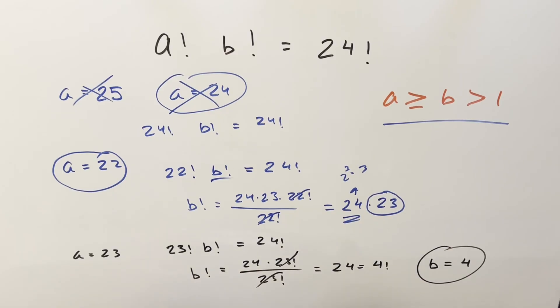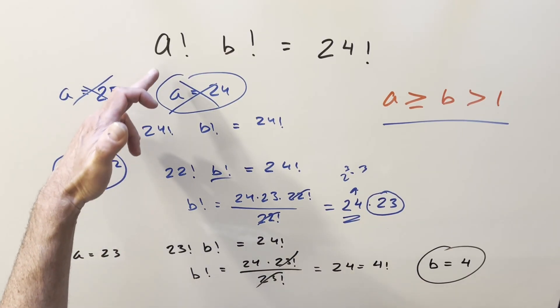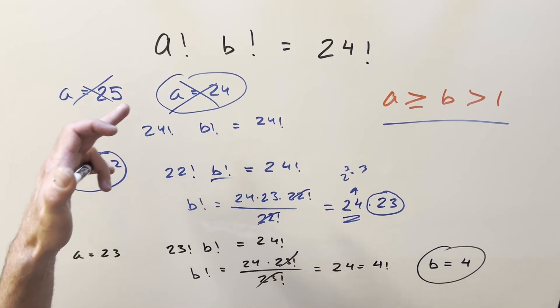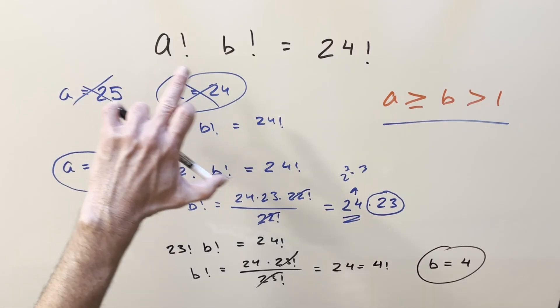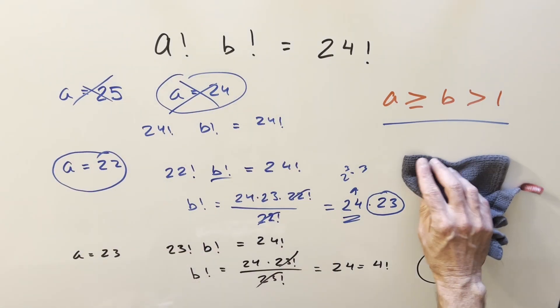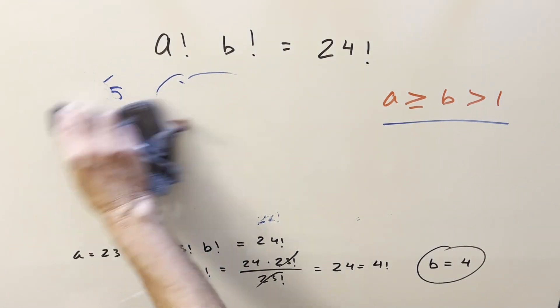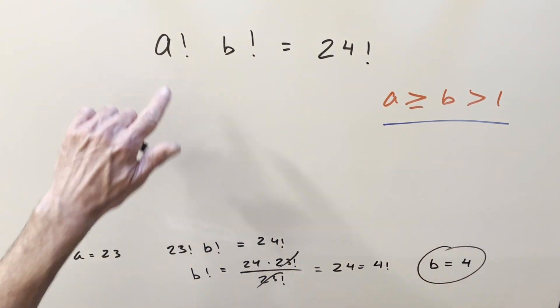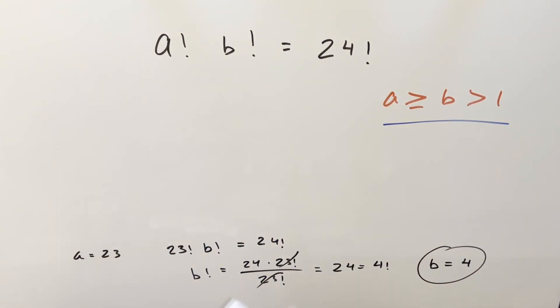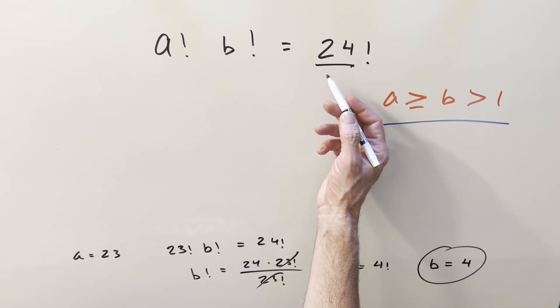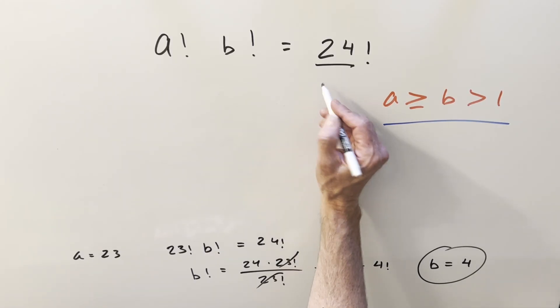The nice thing about this example is there aren't that many ways for this to work. I mentioned before we had that we had 6 factorial times 7 factorial equals 10 factorial. That's pretty rare. I think it's hard to find cases like that. But what we see with this example is kind of a general way for this to work because 24 happens to be the factorial of an integer.